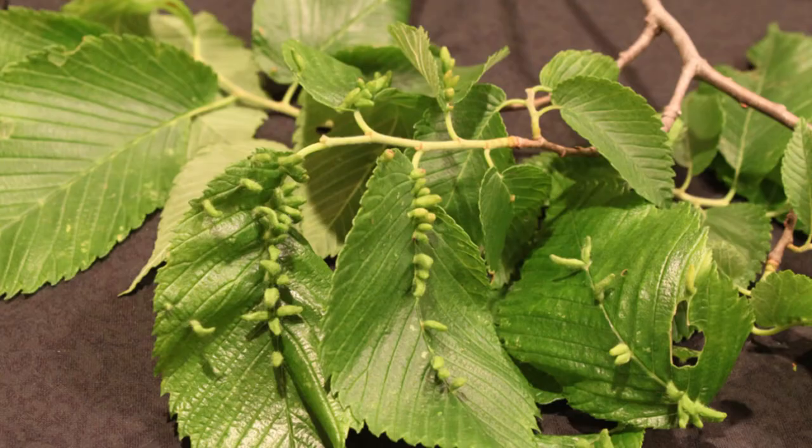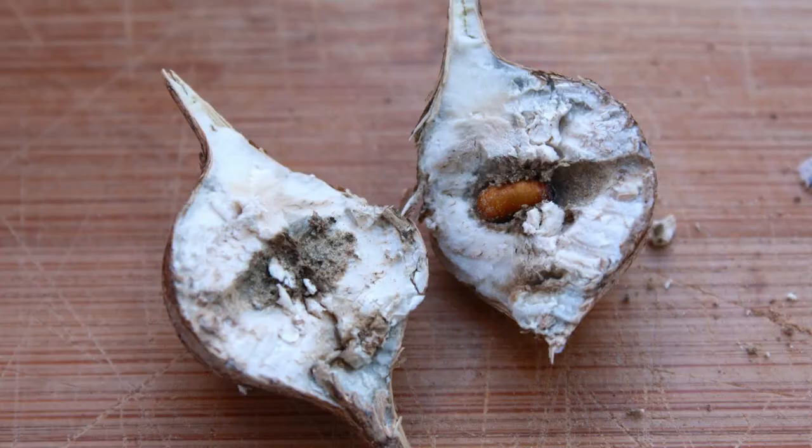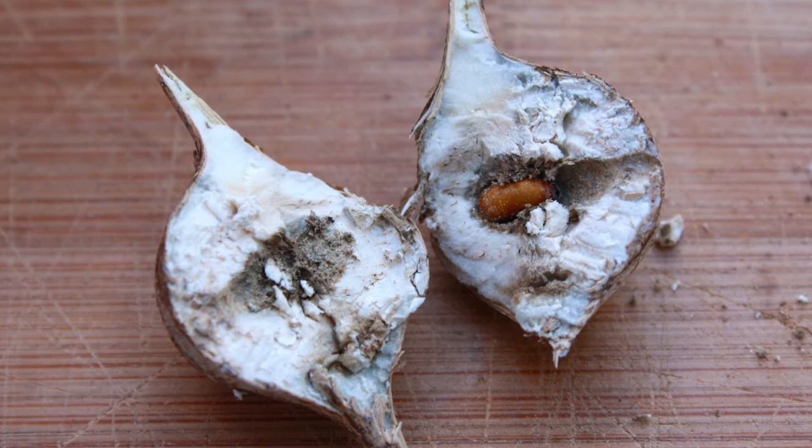Inside that gall will live the baby insect — the larva. It'll grow and go through metamorphosis, and once it gets bigger and becomes an adult, it will emerge and leave the gall behind.